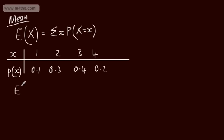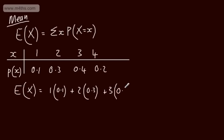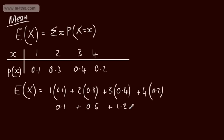If I wanted the expected value of X, or the mean, I would have 1 multiplied by 0.1, plus 2 multiplied by 0.3, plus 3 multiplied by 0.4, plus 4 multiplied by 0.2. That gives 0.1 plus 0.6 plus 1.2 plus 0.8, which adds up to 2.7. So the expected value of X is 2.7. This doesn't have to be one of our values of X — it's simply the mean.